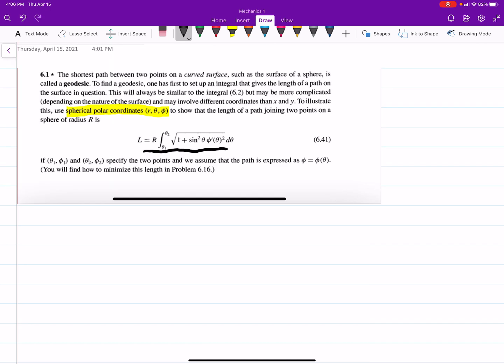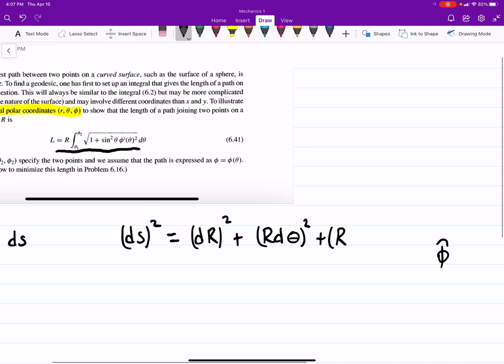So this is the shortest path between two points on a curved surface, and we're using spherical-polar coordinates. So our L is going to be the integral of dS, and dS squared, so that's our line segment here. That's going to be equal to dr squared plus rd theta squared plus rsin theta d phi squared.